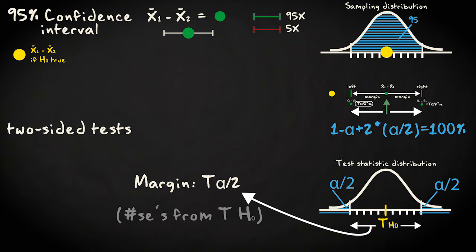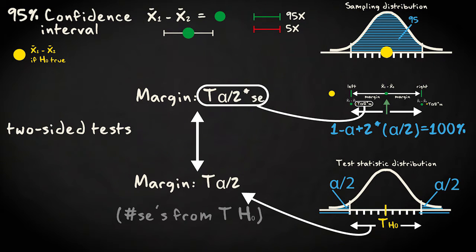For confidence intervals, the margin equals the same critical test statistic value but times the standard error. Because we multiply by the standard error, the scale is returned to the original units of the hypothesis test.